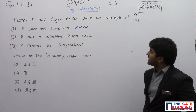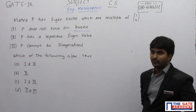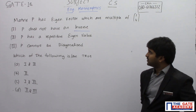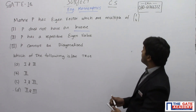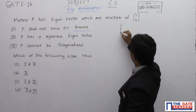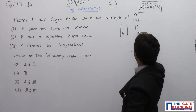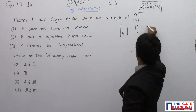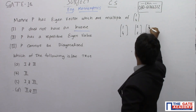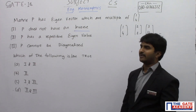The matrix P has eigenvectors which are multiples of [1, 4]. So whatever eigenvectors you are having are multiples of [1, 4] — meaning they could be [1,4], [2,8], [3,12], and so on. These are the eigenvectors for the matrix P.